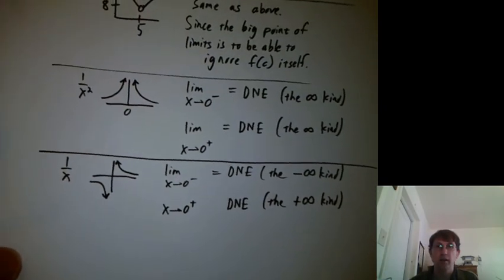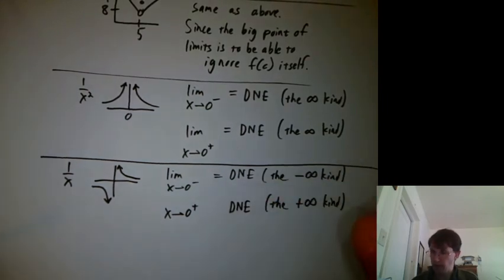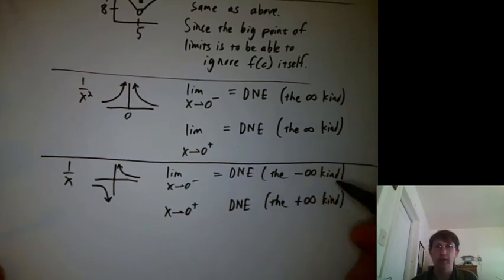Is DNE the positive infinity kind? Can we say DNE equals DNE? So this limit exists? Nope, DNE is not necessarily equal to DNE. Here's two different kinds of it. And so overall, the limit doesn't exist.